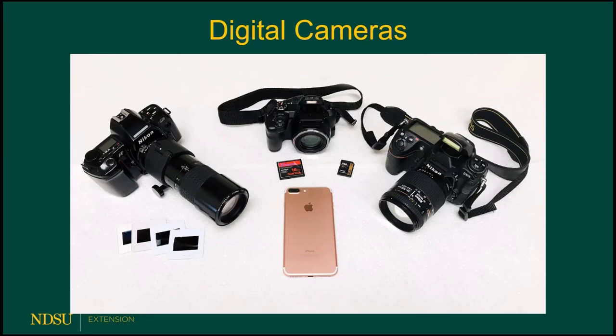Memory is stored via a couple of different memory cards. The one on the left with the red stripe is called a compact flash card, and it can store about 16 gigabytes of data — they're not used all that much anymore. The one on the right with the gold stripe is called an SD card, which is the most commonly used storage medium for digital cameras. That little card can hold 256 gigabytes of data, roughly equivalent to 250,000 color slides.